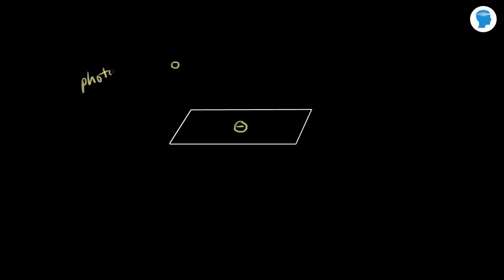This is kind of like a collision between two particles, if we think about light as being a particle. I'm going to draw in a particle of light, which we call a photon. This is massless. The photon is going to hit this electron, and if the photon has enough energy, it can free the electron — it can knock it loose.